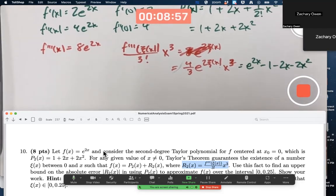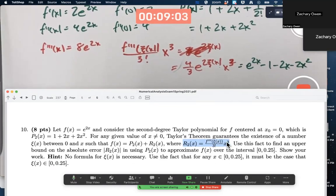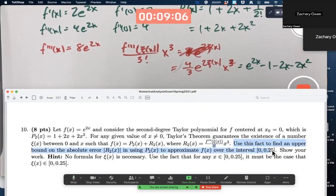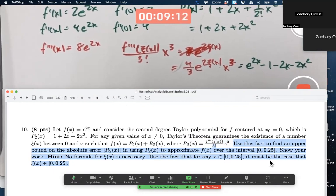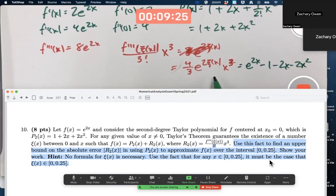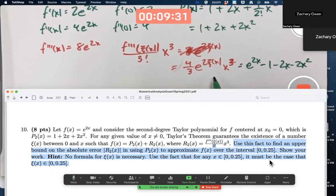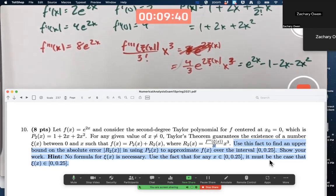In general, we're not going to be able to solve for xi of x. But to do this problem, you don't actually have to solve for xi of x. The rest of the problem says, use this fact to find an upper bound on the absolute error, the absolute value of r2 of x, in using p2 of x to approximate f of x over the interval from 0 to 0.25. Again, no formula for xi of x is necessary, though we could find it here, involving a logarithm. Just use the fact that for any x between 0 and 0.25, xi of x must be in that same interval, because it's between 0 and x. That's what the theorem guarantees.